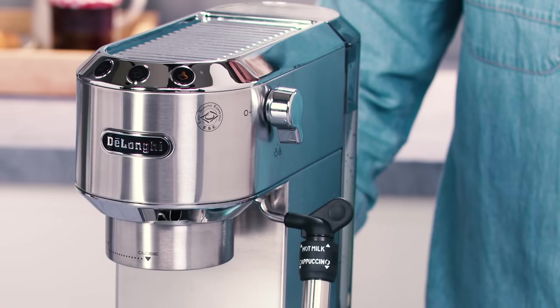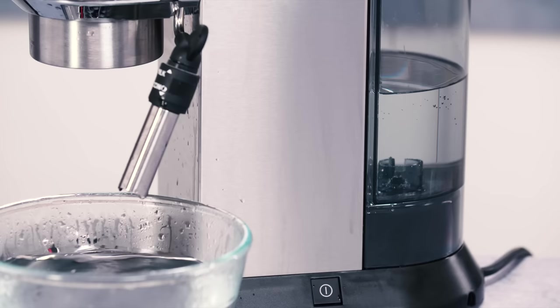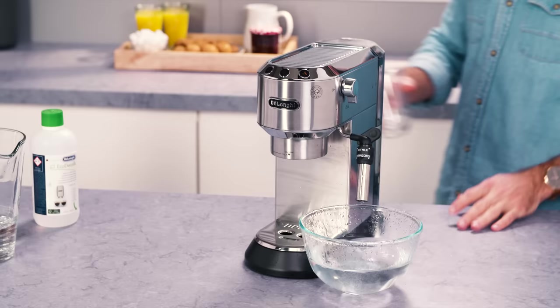The descale program starts and the descaler liquid comes out of the water spout. The descale program removes limescale deposits from inside the appliance by automatically performing a series of rinses and pauses until the tank is completely empty.